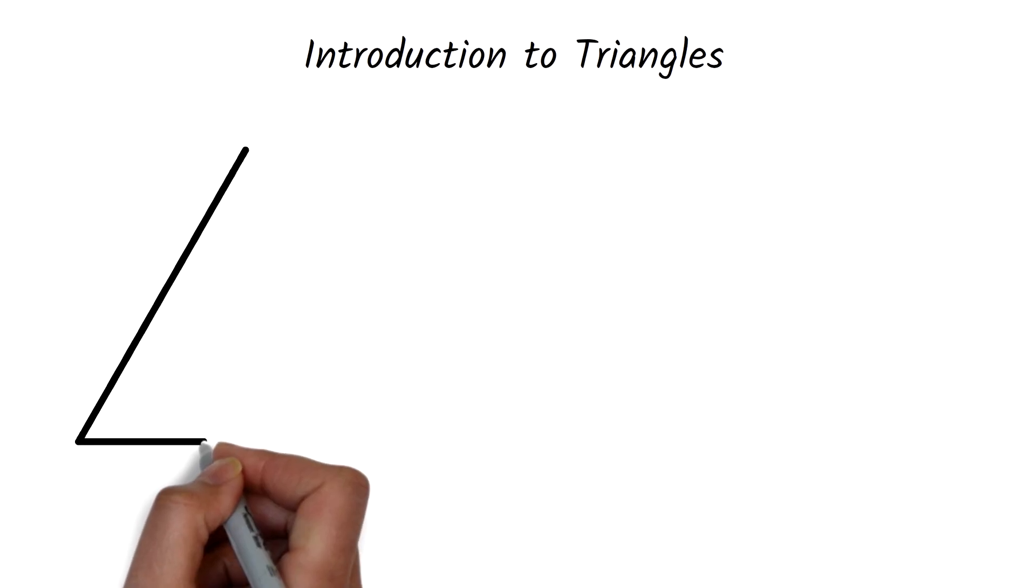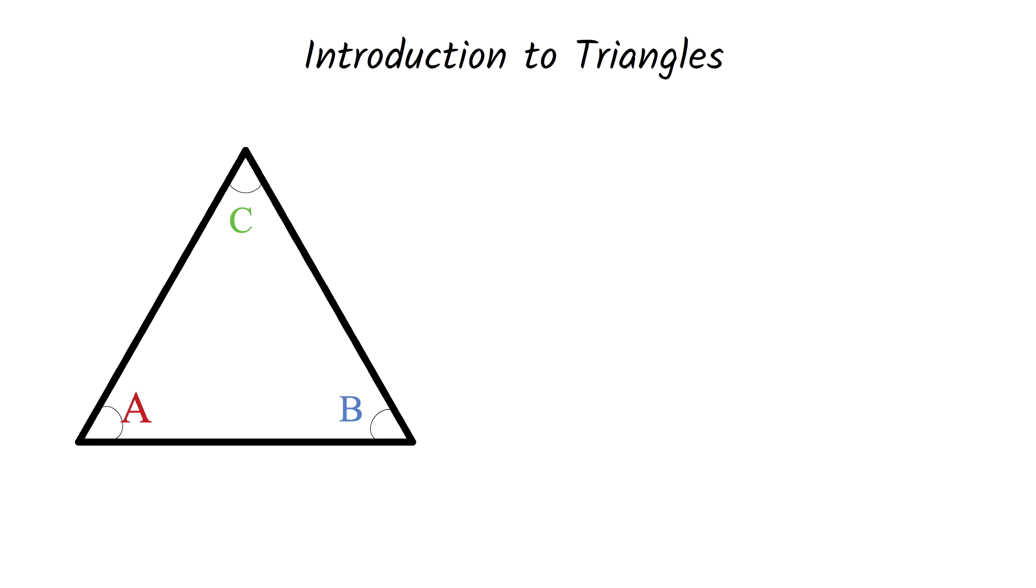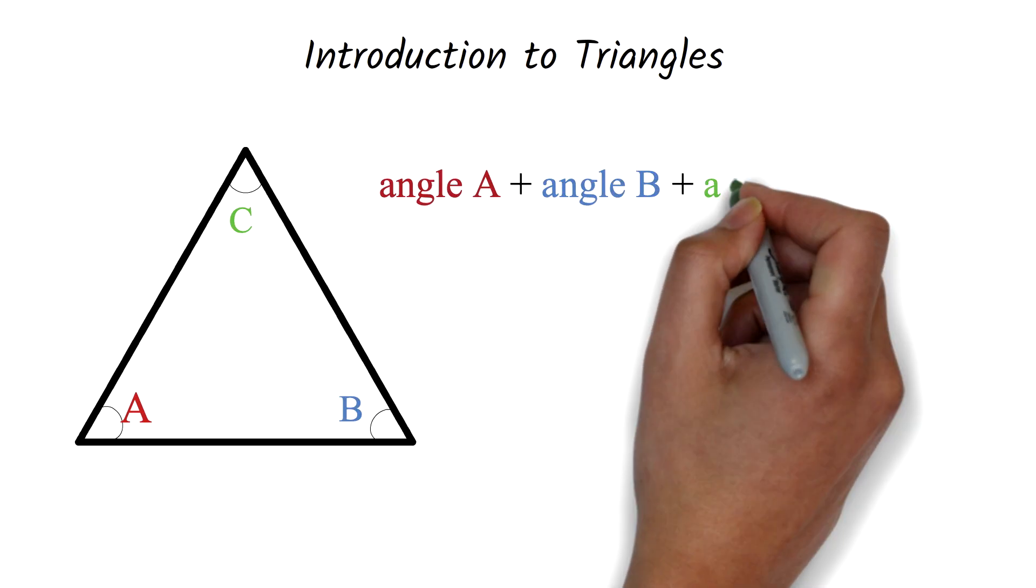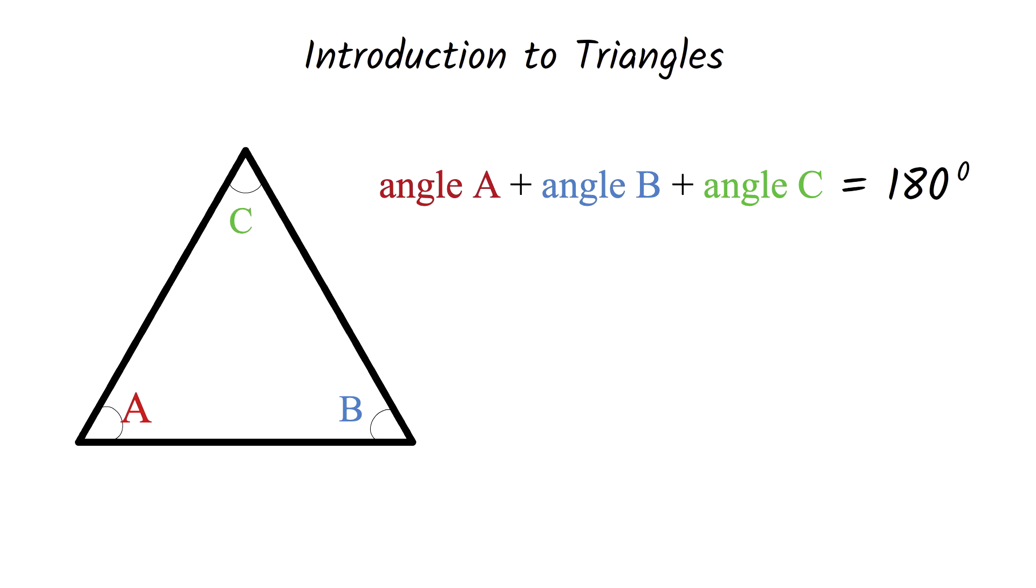A triangle is a plain figure with three sides and three angles. The sum of the interior angles of a triangle is 180 degrees. So in this figure angle A plus angle B plus angle C is equal to 180 degrees. This statement, in my opinion, is the most important in triangles.